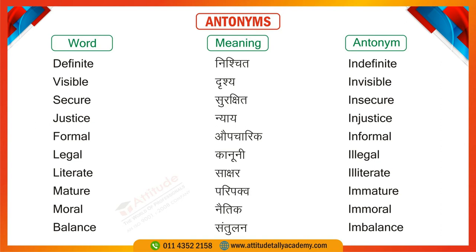There are a definite number of students in my class. Next one is 'Visible,' meaning something that can be seen. For example: The sight is visible from my house, or the Signature Bridge is visible from the Signature Apartments. Its opposite is 'Invisible' — meaning something that cannot be seen. Next is 'Secure,' meaning safe, and its antonym is 'Insecure.' We all feel secure in our country, but women can feel insecure in Delhi.